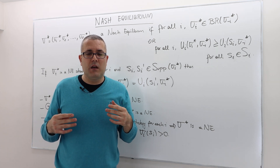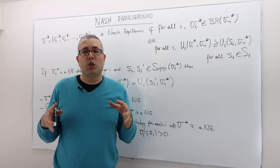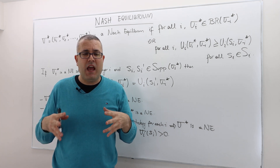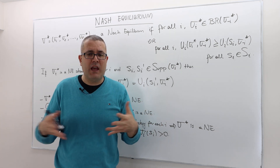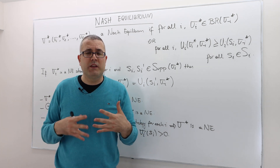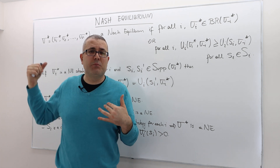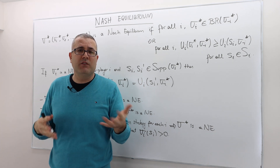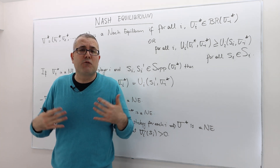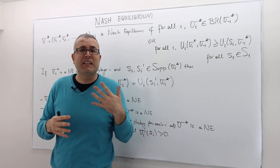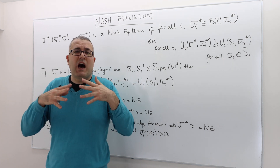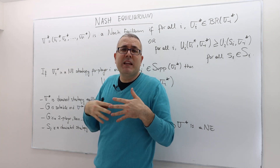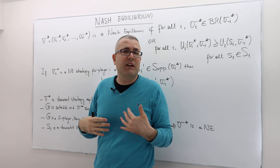It's a concept where once players learn — remember, this is a simultaneous move game, so players choose their strategies simultaneously, and then they learn what each player played and the payoffs. Once they learn what they played, if each player played the Nash equilibrium strategy, then none of them are going to be shocked about the outcome, and none of them are going to regret their actions. They're not going to say 'I should have played something else,' because once they learn the opponents' strategies, they already best responded to them. They did their best given the opponents' strategies.